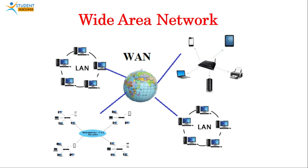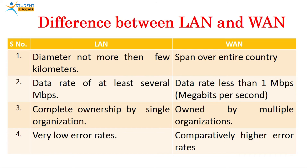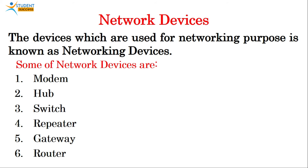Differences between LAN and WAN: In LAN, the diameter is not more than a few kilometers, but WAN spans an entire country. Data rate in LAN is at least several Mbps, but in WAN it is less than 1 Mbps. LAN has complete ownership by a single organization, while WAN is owned by multiple organizations. LAN has very low error rates, but in WAN higher error rates are possible. Next we come to network devices.